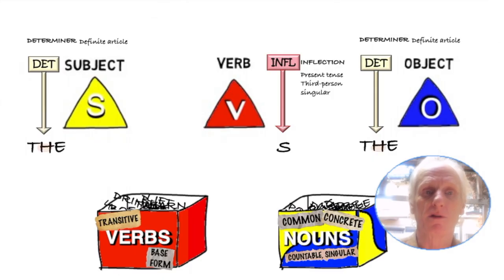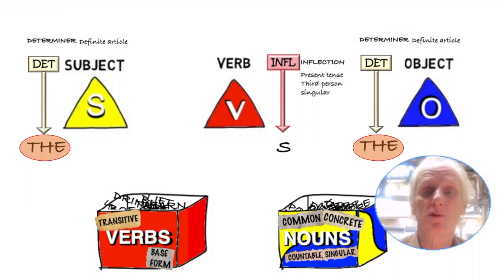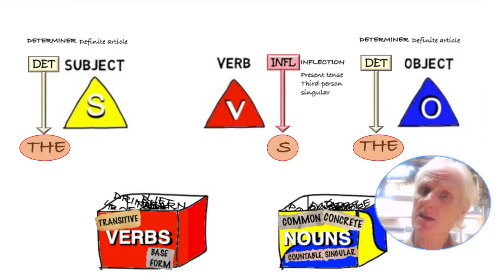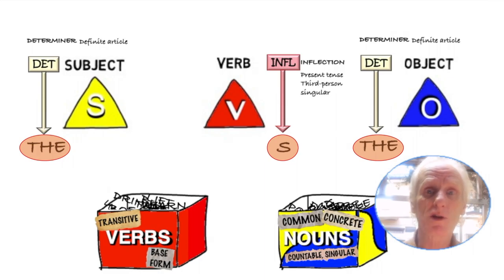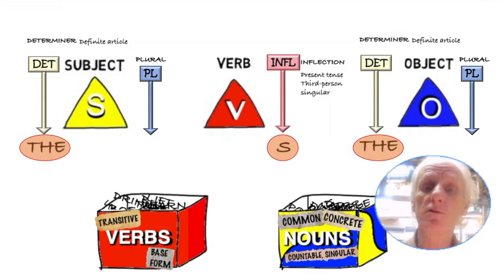We'll talk more about this, and we'll come back to this basic structure later on and look at it in more detail. For example, what is the role of the determiner? And what happens if we change it and use a different one, or if we don't use a determiner at all? What about the inflection on the verb — what is it for, when do we use it, and what other inflections are there? And what happens if a noun is plural? We'll look at all of these and more later on.